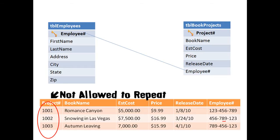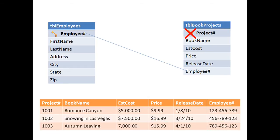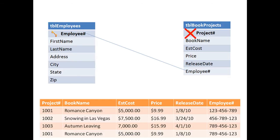Therefore, if we wanted to assign a second employee to any given project, we wouldn't be able to because we couldn't repeat the project number 1001 in this table. We could, however, remove the primary key altogether, and that would be one way to work around the problem. Access would then let us add a second record referring to project number 1001.